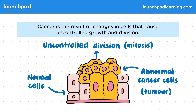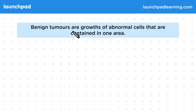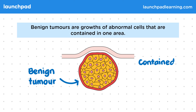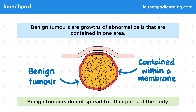So what is a tumour? Benign tumours are growths of abnormal cells that are contained in one area. This diagram shows roughly what a benign tumour would look like underneath the skin. You can see how the cells are contained within a membrane. As these cells are contained, they're not cancerous.